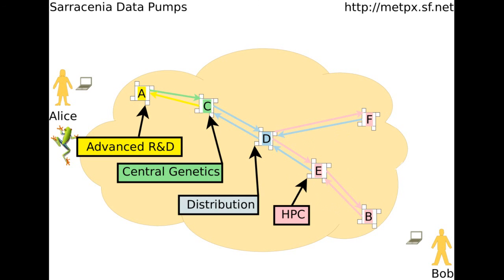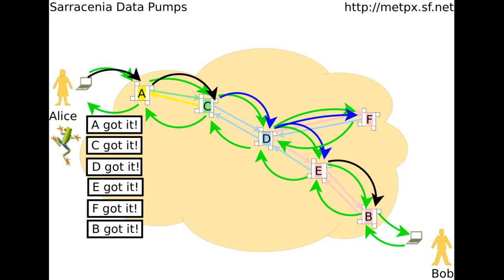About trust — the pumps are independent peers, with no trust between them or central management. They just agree to pump data on each other's behalf. And of course, Bob does not have to trust Alice either. So the pumps forward the data to B, and Bob picks it up from there.